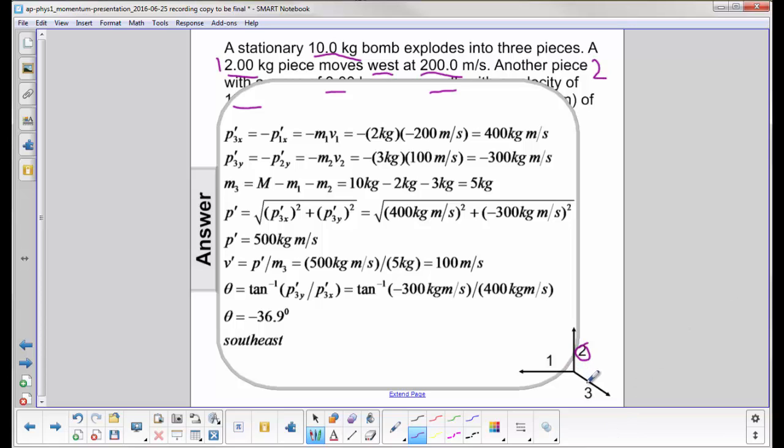Now I need to find the mass of this particle. Well, I know the total mass of the bomb right here was 10 kilograms. I subtract off the masses of the two pieces and I get five kilograms. So we'll need that a bit later.